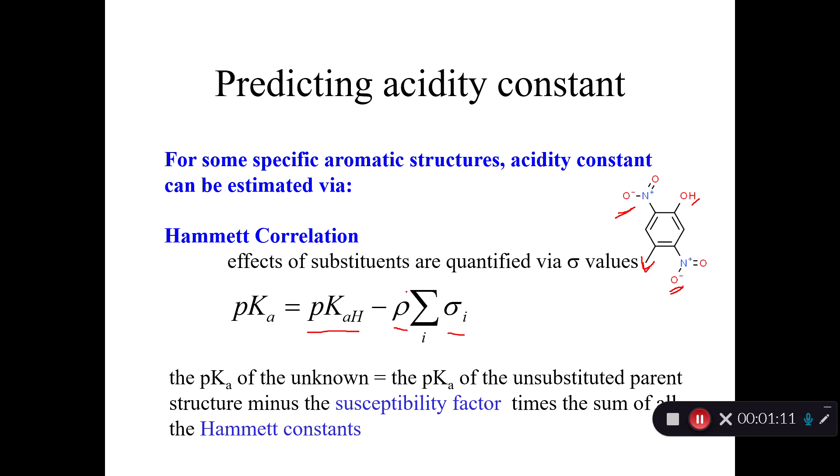So this rho has to do with the susceptibility of the backbone, how much is the backbone affected by these substituents. And then the Hammett constants turn out to be really useful concepts. And you can end up using Hammett constants to do lots of other things besides just predicting pKa, which is part of the reason why we introduced that here.